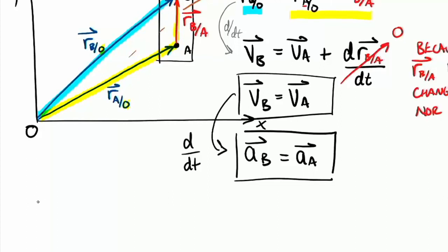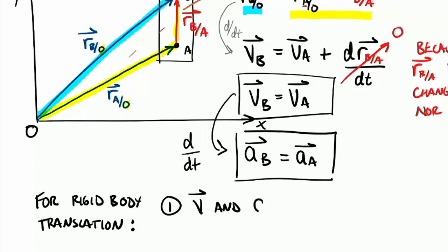So to put a little statement here, we can say for rigid body translation, there's going to be three different points that we can make about rigid body translation. One of those is that the velocity V and the acceleration A are the same for every point on a rigid body.